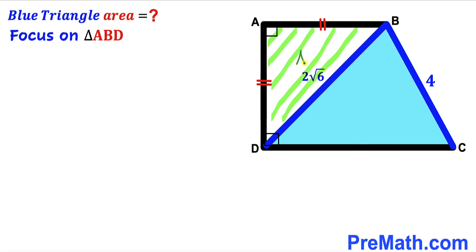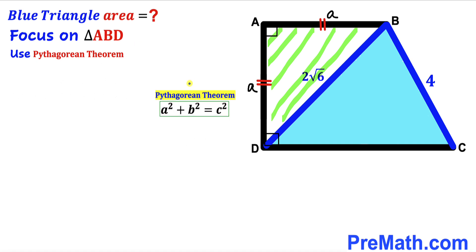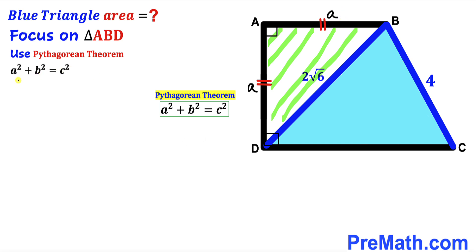Let's focus on right triangle ABD. We can see that side length AB equals side length AD — I'll label each as lowercase a. We are going to apply the Pythagorean theorem: a² + b² = c². In our case the hypotenuse is 2√6, and the two legs are both lowercase a. Our task is to solve for the value of a.